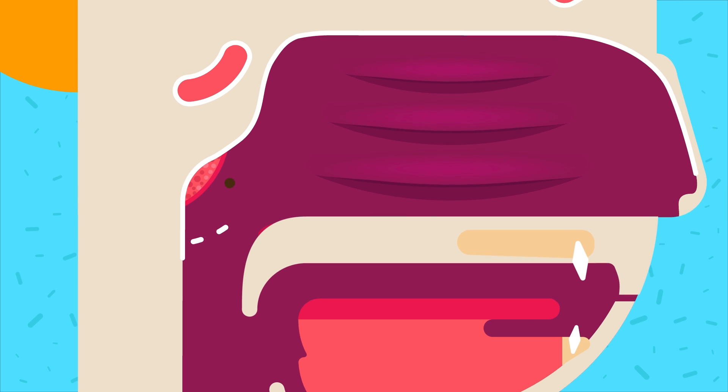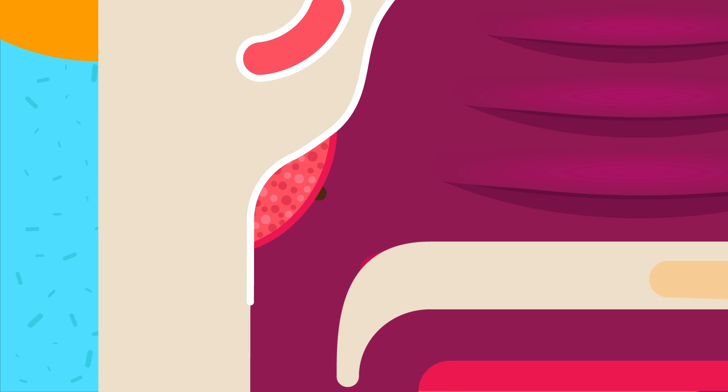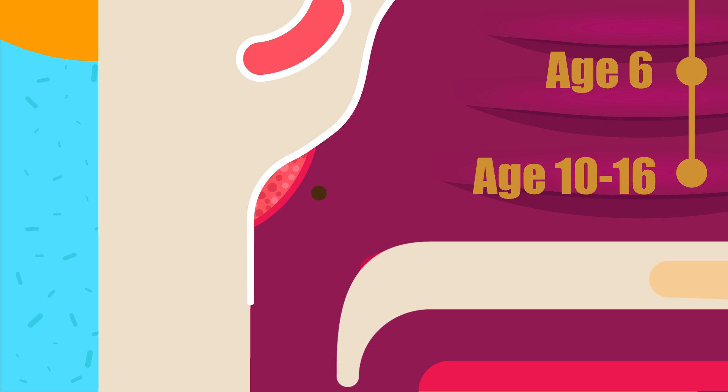are situated at the junction of the roof and posterior wall of the nasopharynx. Adenoid tissue is present at birth, shows physiological enlargement up to the age of 6 years, and then tends to atrophy at puberty and almost completely disappears by the age of 20.